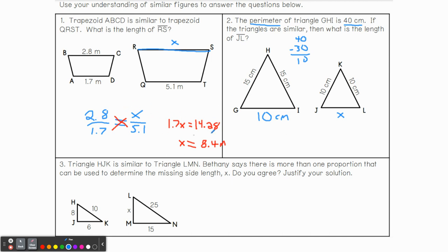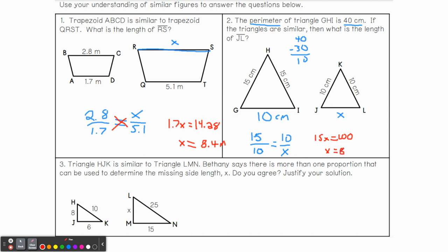Next, we set up the proportion. JL corresponds with GI, so I need to incorporate that. Let's do GH which is 15, over GI which is 10, set equal to its corresponding side 10 over x. Cross multiply: 15x equals 100. Divide by 15 — you may need a calculator for this. You get a repeater: 6.6 repeating is our answer for x.